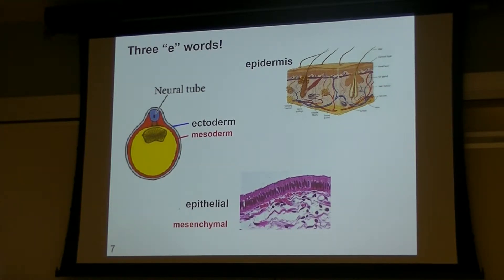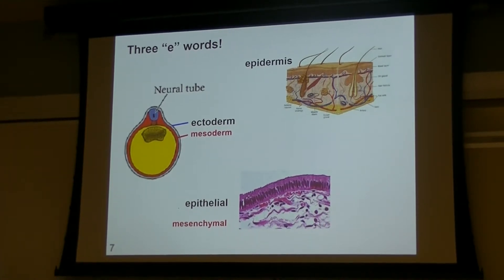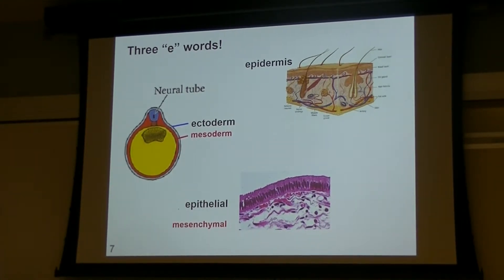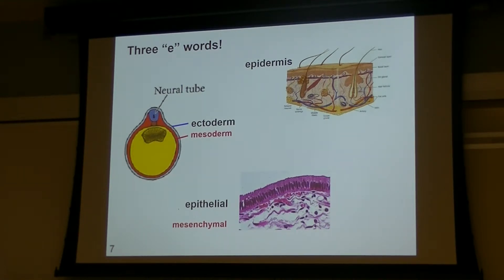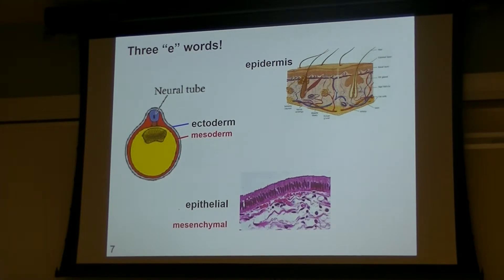At this point, let's draw a distinction between three words that start with E. First, ectoderm — that is one of your germ layers: ectoderm, mesoderm, and endoderm — and the ectoderm gives rise to a number of structures in the body. Epidermis refers to basically the skin or the outer covering of the body, including those four layers we just talked about — it's a derivative of ectoderm, but not the only thing ectoderm makes.